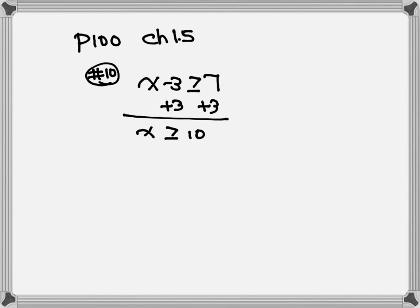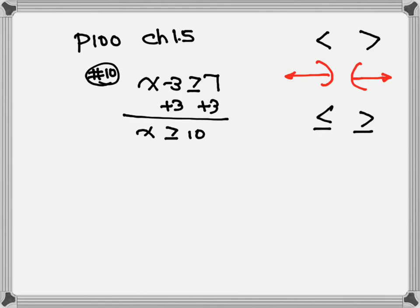To graph this: for less than or greater than, when we graph we use parentheses. The point of the parenthesis points to the left, so we draw the arrow to the left. If the parenthesis points to the right, we draw the arrow to the right. If we have greater than or equal to — with the equal sign — we must use a bracket. The bracket point is pointing to the right, so we draw the arrow to the right.